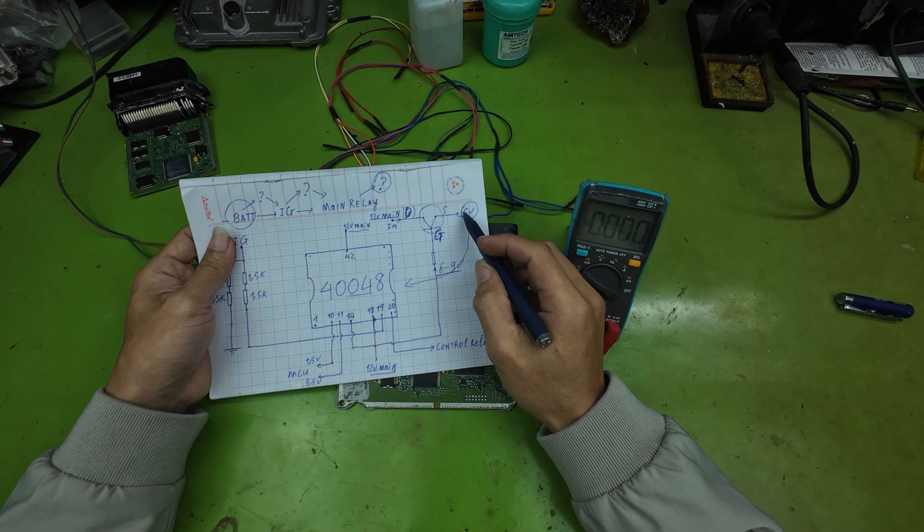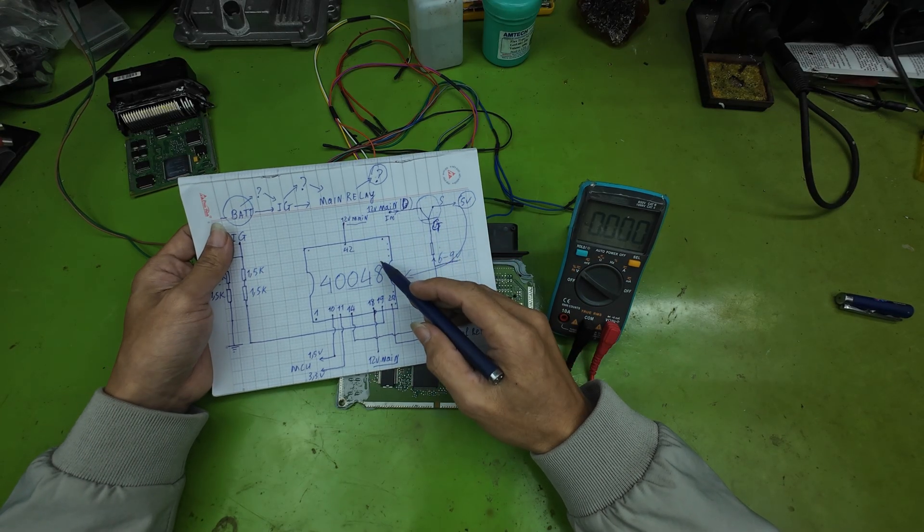Case B: if 5 volts is present, but the ECU still does not run, analyze the next rails.